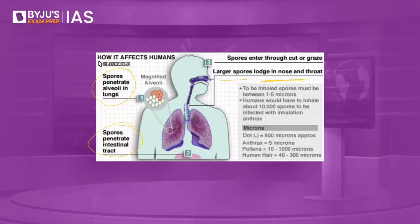Large spores can lodge in the nose. The minute these spores are inhaled by human beings and enter the body, they get activated. The bacteria then start multiplying, spread throughout the body, produce toxins, and cause severe illness. This can happen when people breathe in the spores, eat food or drink water contaminated with spores, or get spores in a cut or scrape on the skin.